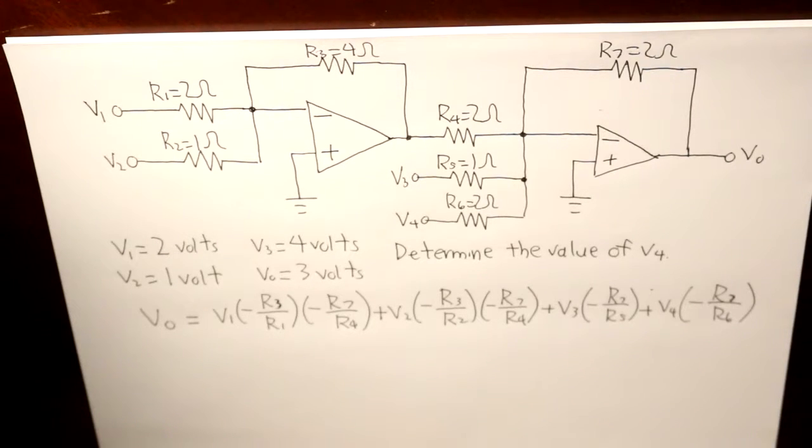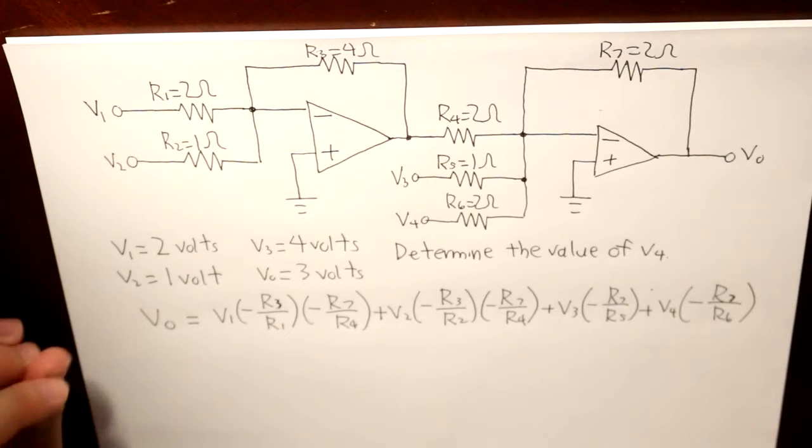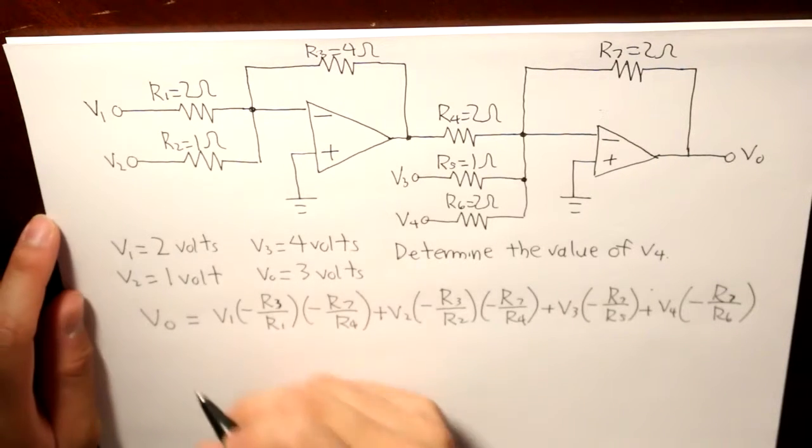Well, all we need to do is just isolate all the terms onto one side, leaving V4 alone on the other side, and we can determine what V4 is going to be. So, essentially, it's going to look like this.